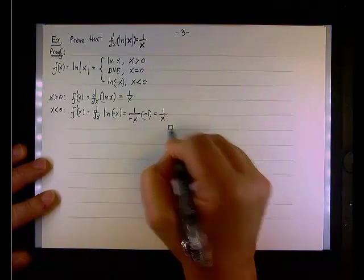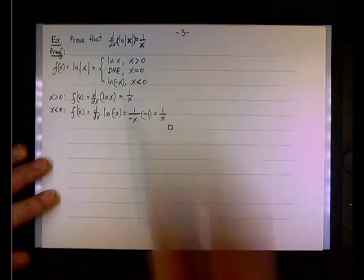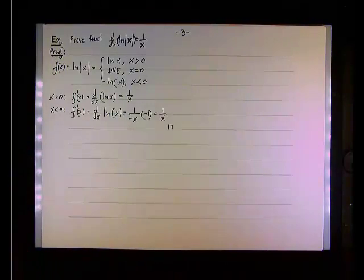And with this, we completed the proof. So now we proved that the derivative is 1 over x, regardless which branch of the function, or which interval we are working on.